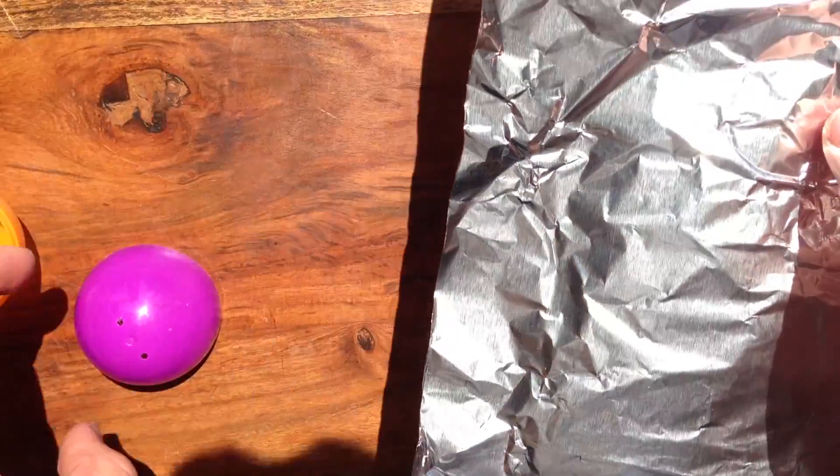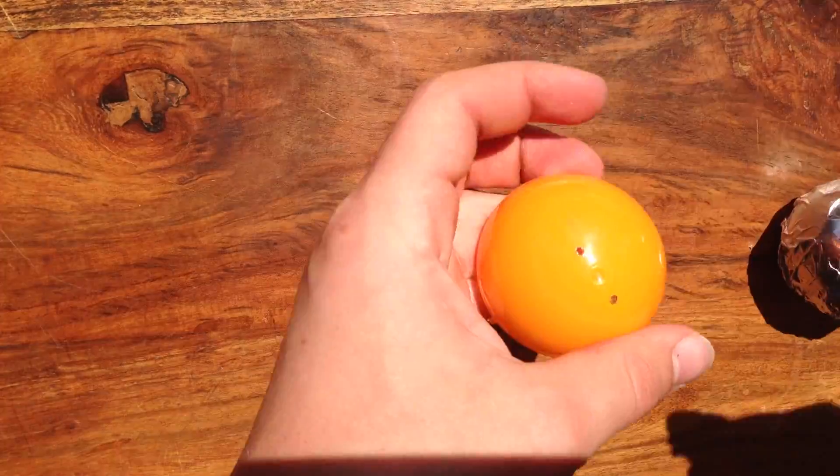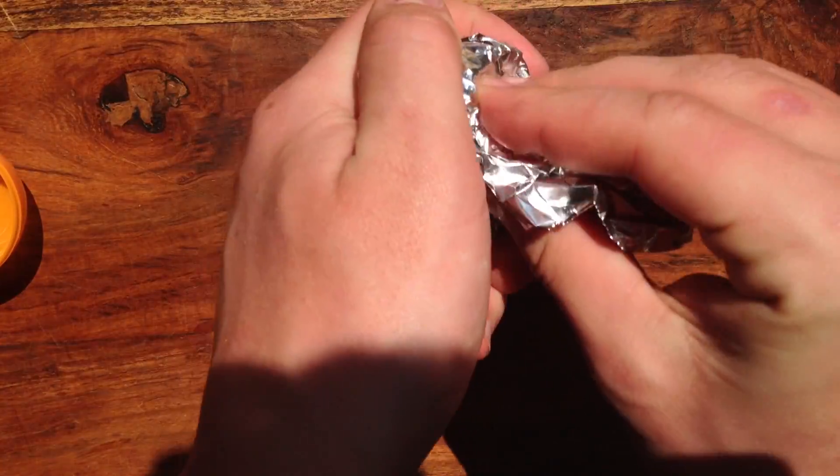First step is to take your spherical object and coat it with tinfoil. Do this for both of them, and when it's done, it should look like this.